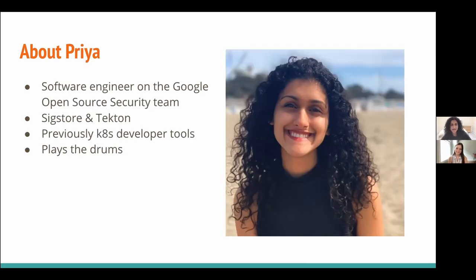And I'm Priya. I'm a software engineer on the Google open source security team. I work on open source projects like SIGSTOR and Tekton. In the past, I've worked on open source Kubernetes developer tools like Minikube and Scaffold. Fun fact: I like to play the drums, but it's probably not so fun for the people I live with.